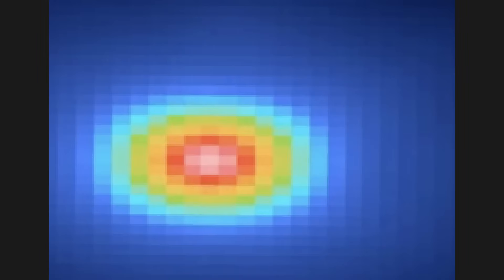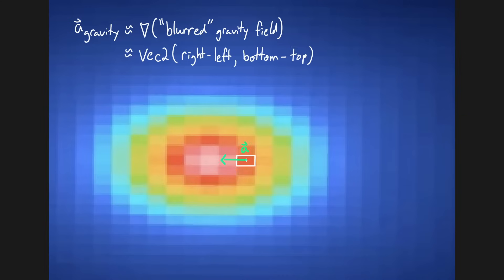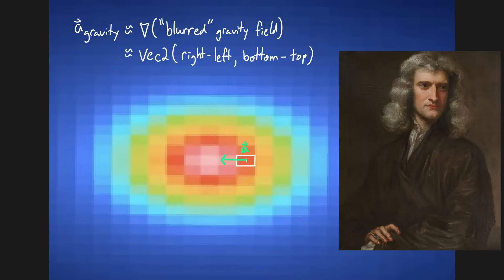To calculate the acceleration acting on each particle, I instead sample the gradient of the grid — so the grid cell directly above, below, left, and right of the particle. This gives behavior that appears fairly realistic, despite not being faithful to Newton's equations.